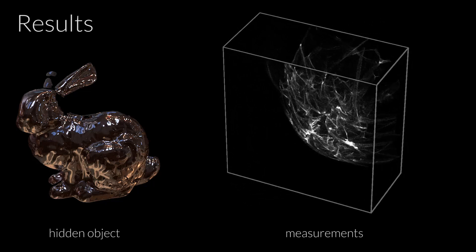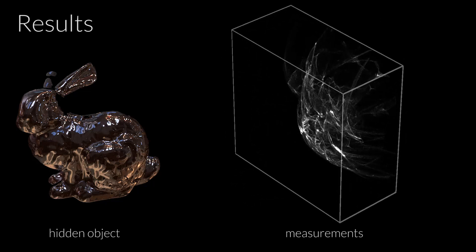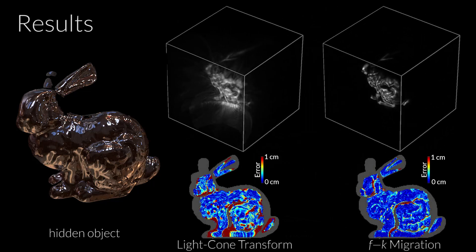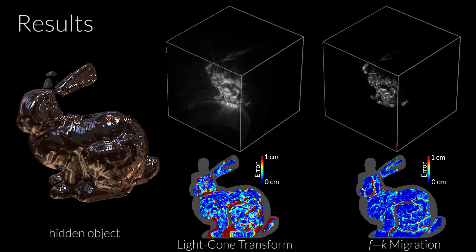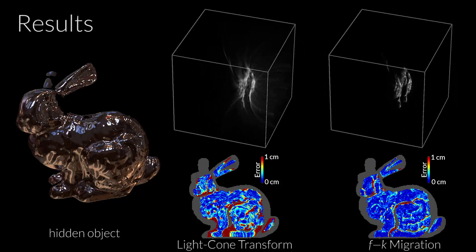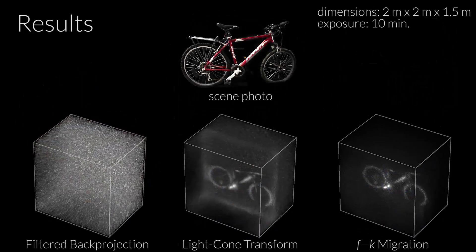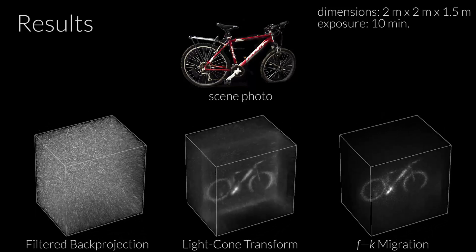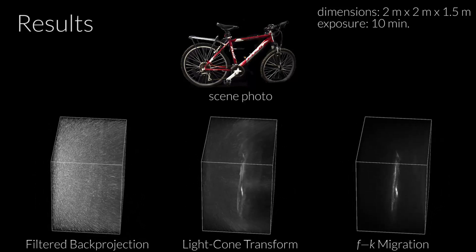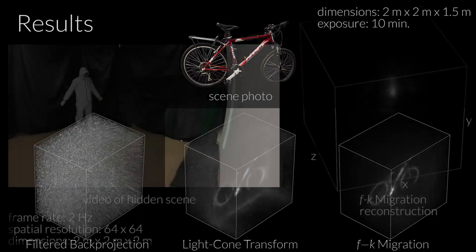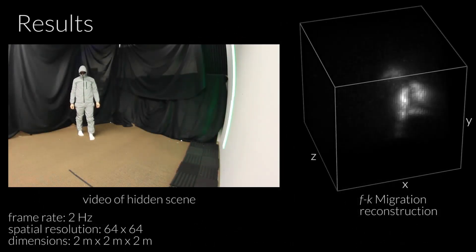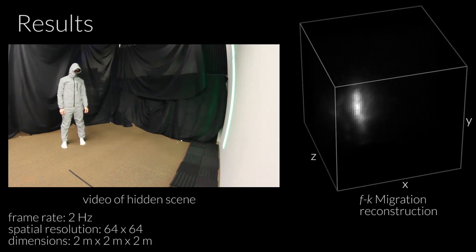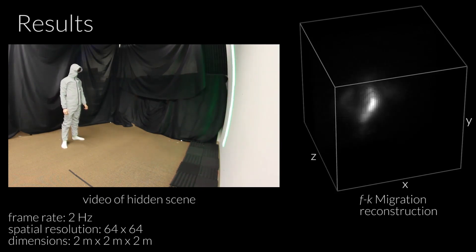This scene consists of simulated measurements of a specular bunny. Using FK migration allows us to more accurately recover the 3D geometry compared to the light cone transform. Moreover, as shown in this captured scene of a bicycle, FK migration is more resilient to noise in the measurements for short exposure times. We demonstrate capture at interactive rates of 2 frames per second with a higher resolution scan and 4 frames per second at lower resolution.